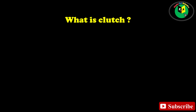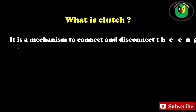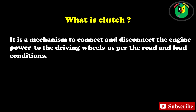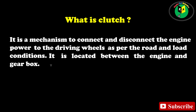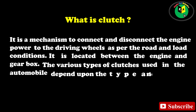What is a clutch? It is a mechanism to connect and disconnect the engine power to the driving wheels as per the road and load conditions. It is located between the engine and gearbox. The various types of clutches used in automobiles depend upon the type and use of vehicles.